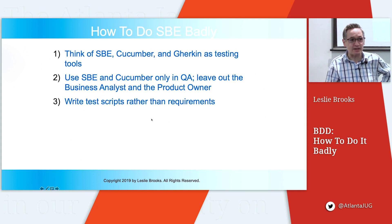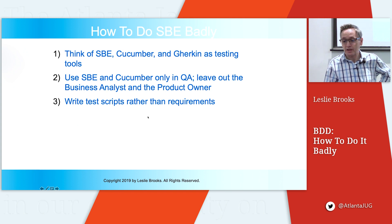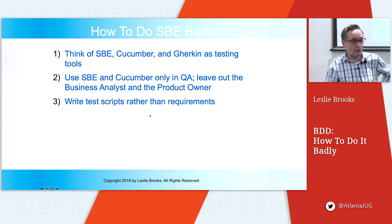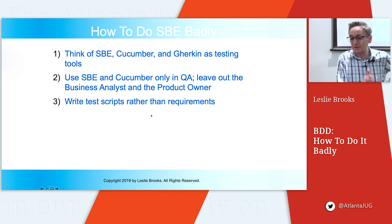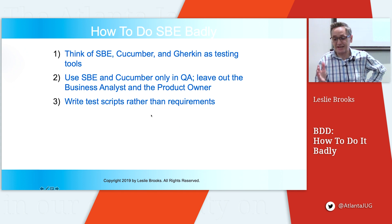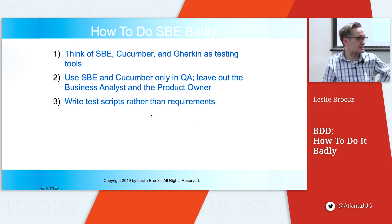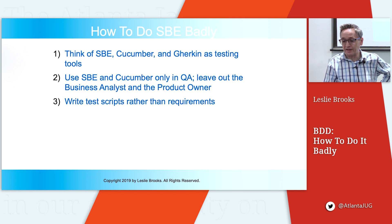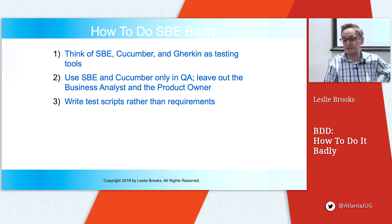These are systemic process problems. If you can avoid these, you are well on your way to dramatically improving the entire requirements, develop, test, deliver process. If you get these pieces right, you have a good process, and now you only have to implement it well.